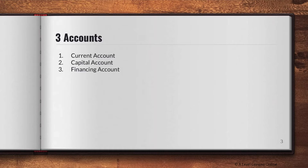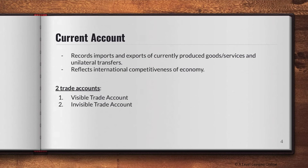There are three different accounts we'll go through, each containing various sub-components: the current account, the capital account, and the financing account. The current account records imports and exports of currently produced goods and services and unilateral transfers. It reflects the international competitiveness of an economy. Within the current account, there are two trade accounts: the visible trade account and the invisible trade account.